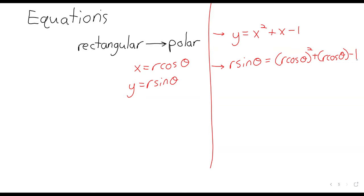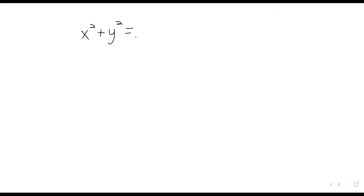Let's look at an example where we get something nice. If this was the only example we showed you, you'd probably leave thinking this is just a bad idea and we should never do it. So let's take a look at x squared plus y squared equals 9. You may recognize this as the equation of a circle, and polar coordinates work well when you have circles. So trying to convert this into polar coordinates isn't a crazy thought.